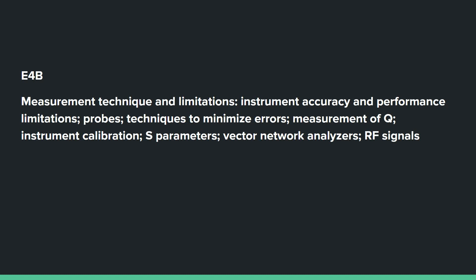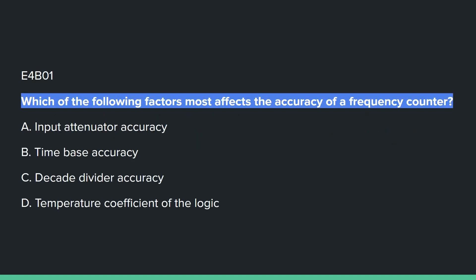E4B covers measurement technique and limitations: instrument accuracy and performance limitations, probes, techniques to minimize errors, measurements of Q, instrument calibration, S parameters, vector network analyzers, and RF signals.